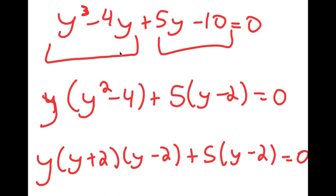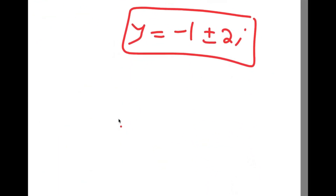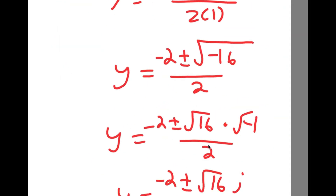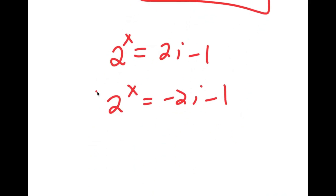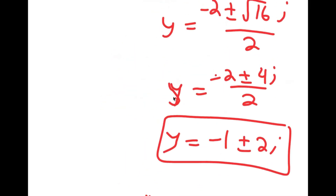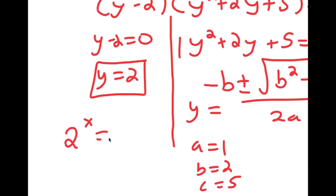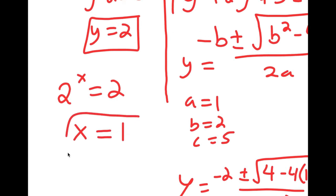Now remember we let 2 to the power of x equal to y. So we get 2 to the power of x is equal to 2i minus 1, and 2 to the power of x is equal to negative 2i minus 1. We can't take the power of a positive number and make it equal to something with i, so there is no solution for these, meaning we can only use y equals 2. So I get 2 to the power of x equals 2, meaning our only solution for x is 1.